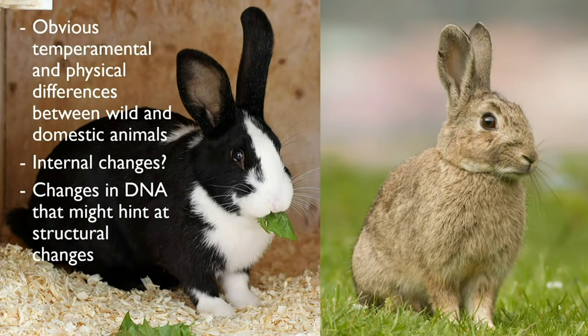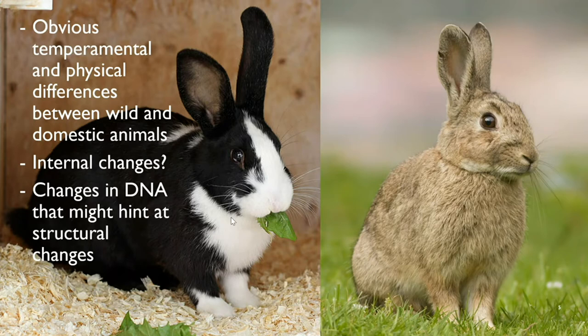Obviously, there are temperamental and physical differences between wild and domestic animals — look at the difference between wolves and dogs. Today we're going to be focusing on rabbits. As you can see, there's definitely a physical difference between a wild rabbit and a domestic rabbit. But what are some of the internal changes in the brain that we may not be aware of? With DNA sequencing, we've been able to see that the DNA code shows there might be brain changes due to the domestication process.